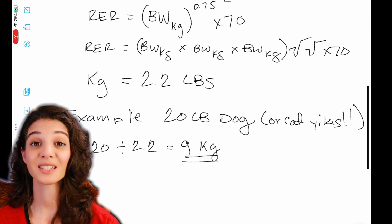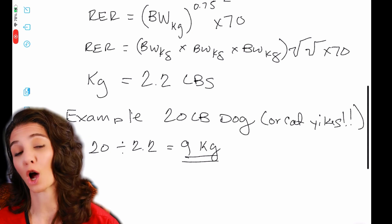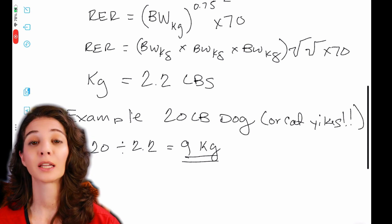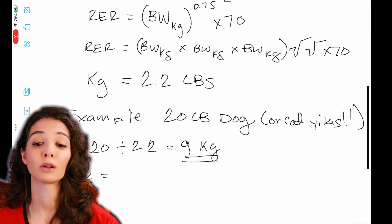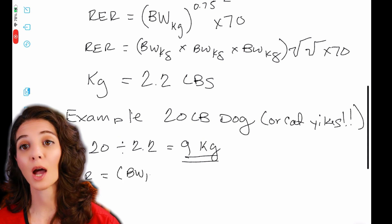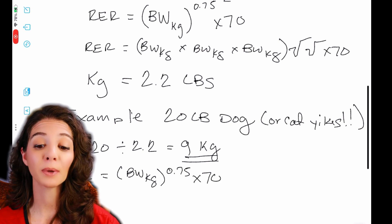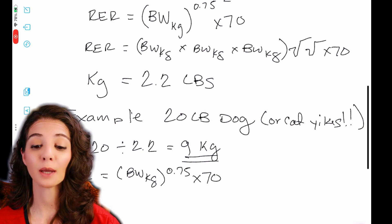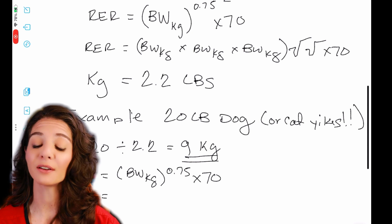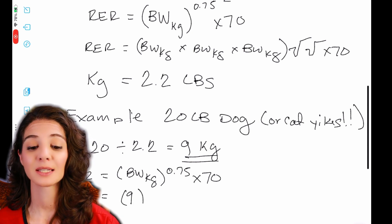So 20 pound dog is going to be 20 divided by 2.2 and that will give you kilograms. And so that's nine kilograms. So a 20 pound dog is the same as a nine kilogram or nine kilo dog. All right. So now we're going to go ahead and plug that into the equation.